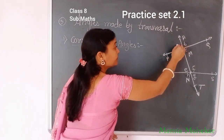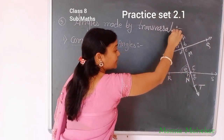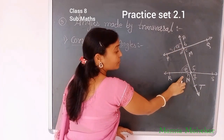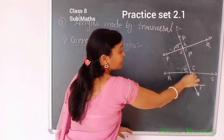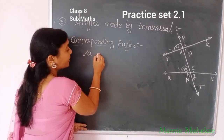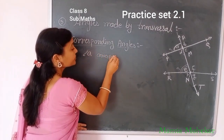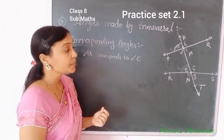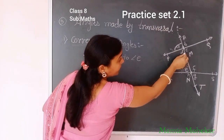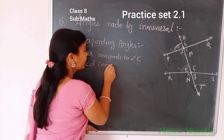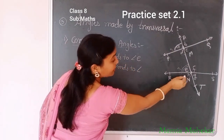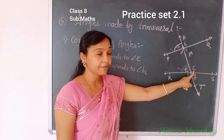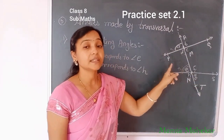For example, angle A and angle E — the transversal is on the left side, same side and same direction, meaning above line PQ and also above line RS. So angle A corresponds to angle E. These are corresponding angles. Similarly, angle B corresponds to angle F, and angle C corresponds to angle G. These are the corresponding angles.